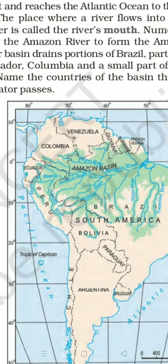On the equator, direct sun rays fall and day and night are equal. So the climate there will be hot and humid. Because of the direct intense heat, evaporation takes place faster and there is rainfall throughout the year. The climate of the Amazon Basin is very hot and wet — it rains constantly, making it feel very sticky and sweaty. It is a very humid type of climate.